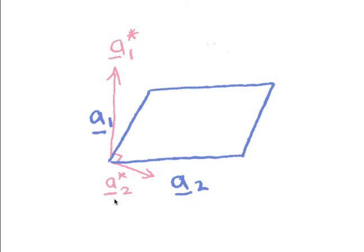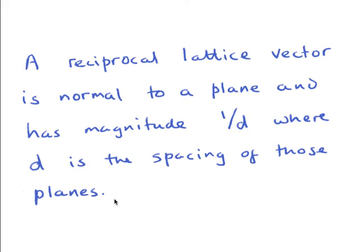In the hexagonal case, the [100] direction is not parallel to the (100) plane normal. The angle between the [100] direction and the [010] direction is 120 degrees, whereas between the plane normals it is 60 degrees. So in the hexagonal stereogram we had the plane normals at 60 degrees. A reciprocal lattice vector is simply normal to a plane and has magnitude 1 upon d, where d is the spacing of those planes.